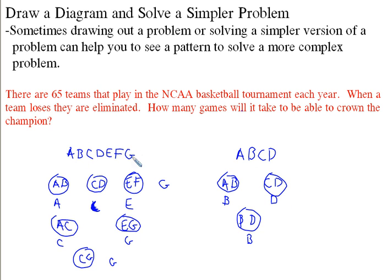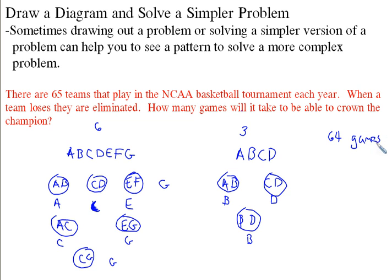If you look at the pattern: when there were seven teams, there were six games needed. When there were four teams, there were three games needed. So you can probably guess — for 65 teams, you're going to need 64 games, because you're left with just one team that is not eliminated.